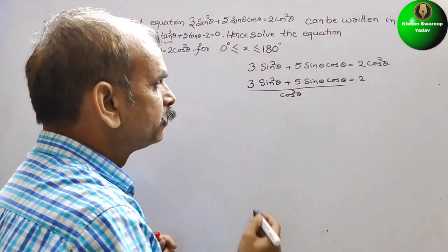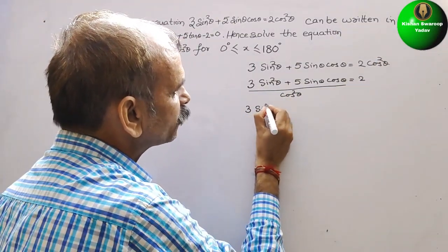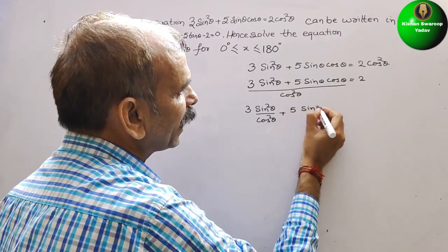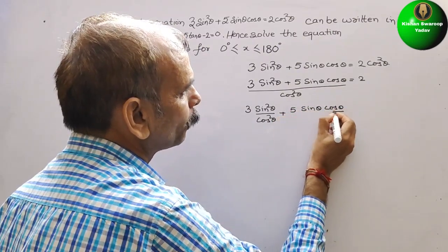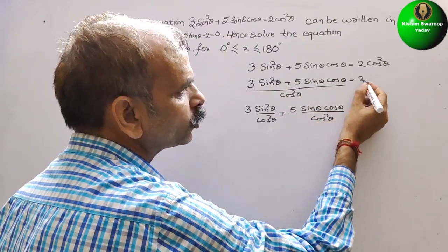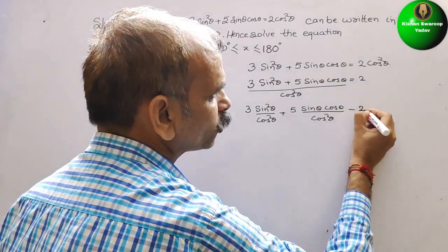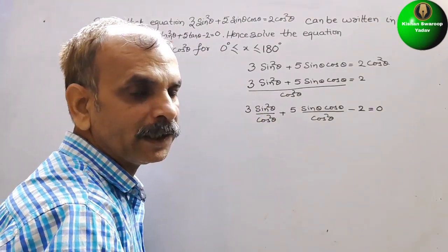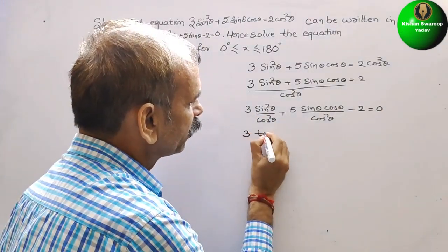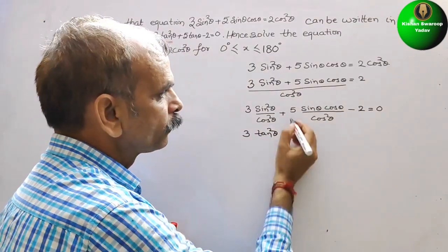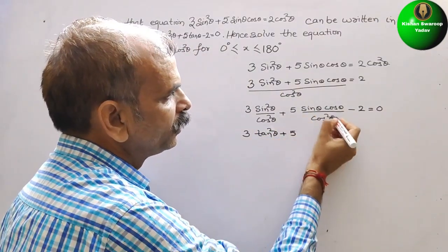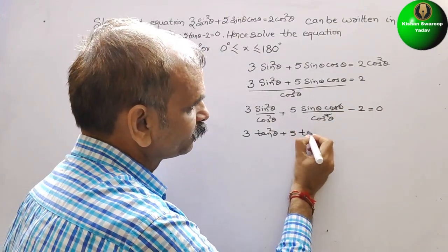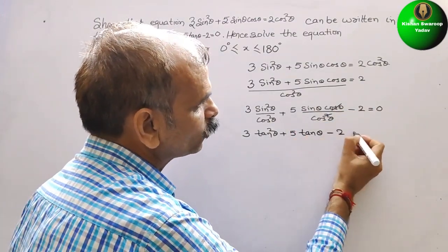Now split it. It will be 3sin²θ/cos²θ + 5sinθcosθ/cos²θ, and bring the 2 to the left side as minus 2 = 0. Since sin²θ/cos²θ = tan²θ, it becomes 3tan²θ + 5tanθ minus 2 = 0.